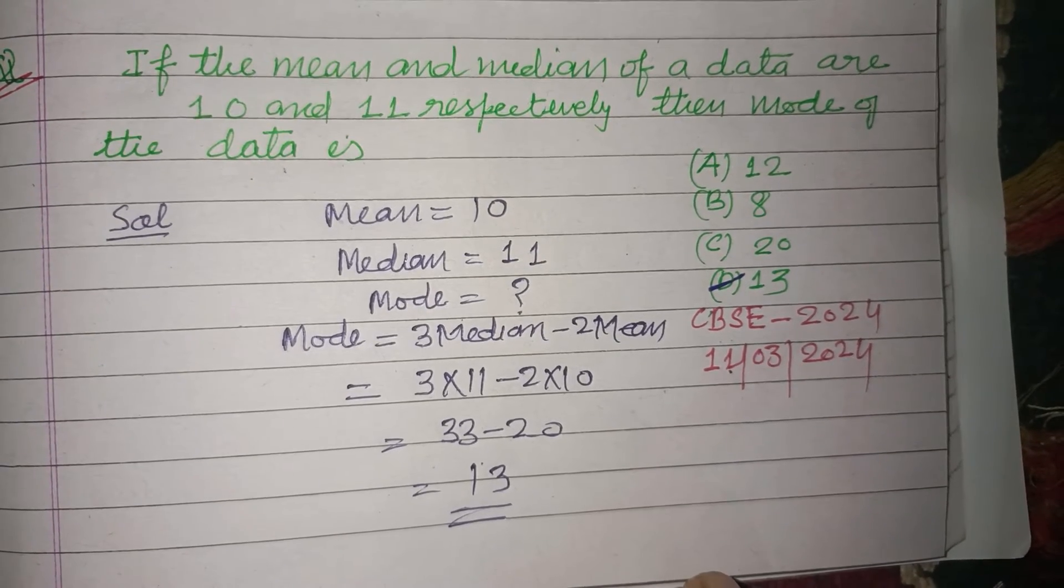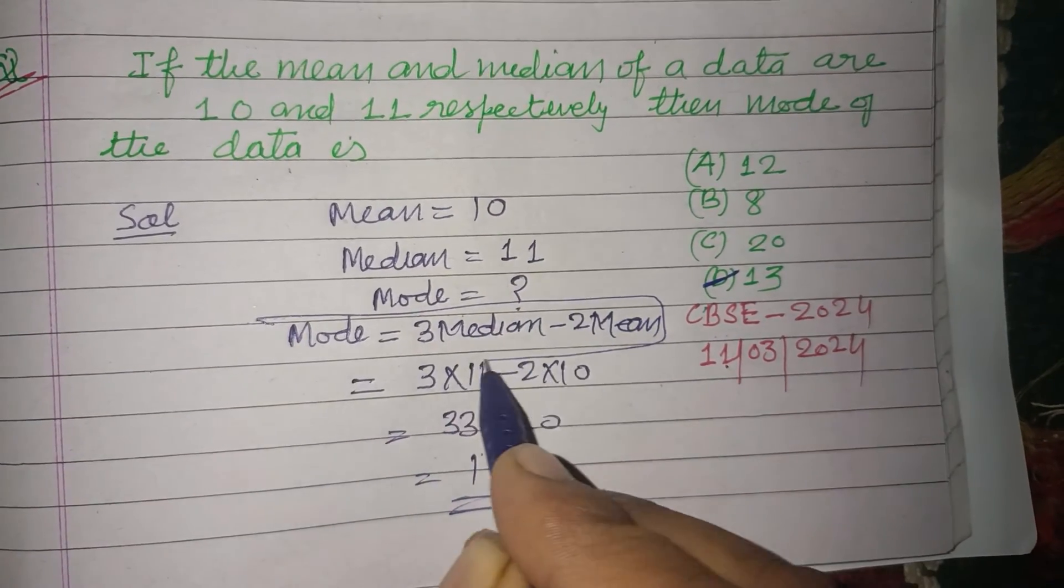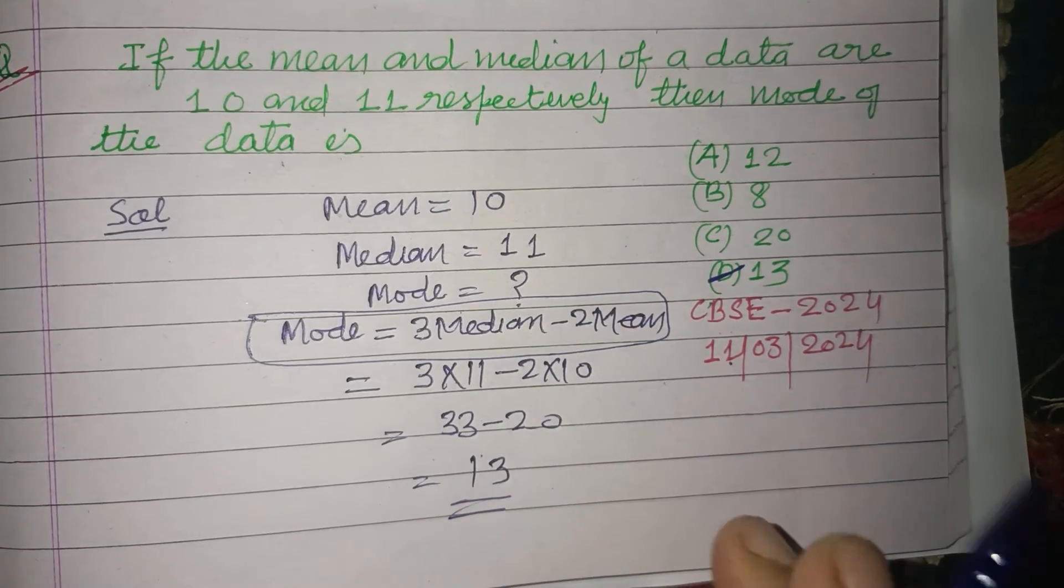To solve this type of question, you should learn this formula: Mode equals 3 times median minus 2 times mean.